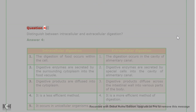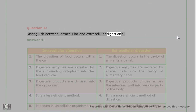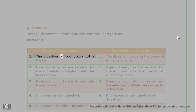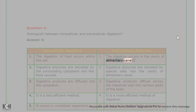Question 4: Distinguish between intracellular and extracellular digestion. Answer 4: Intracellular digestion vs Extracellular digestion. 1. The digestion of food occurs within the cell. 1. The digestion occurs in the cavity of the alimentary canal.